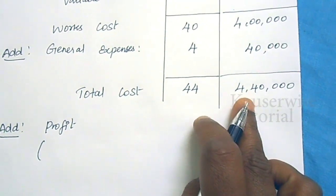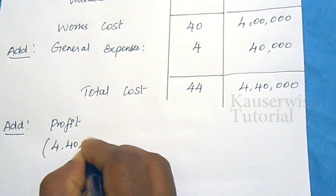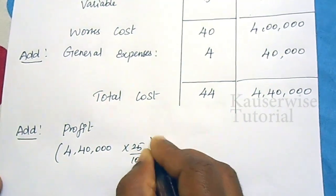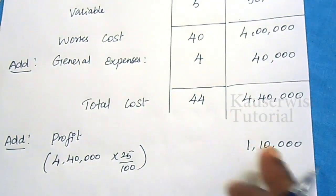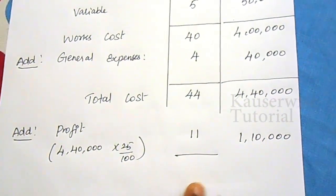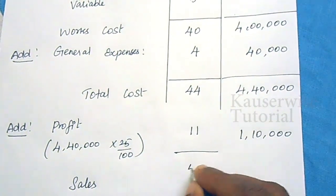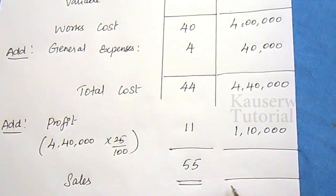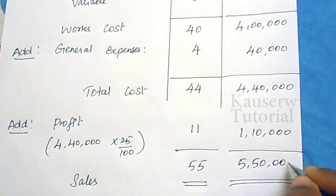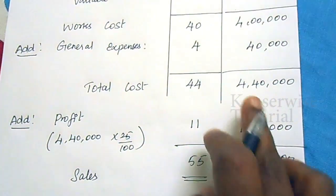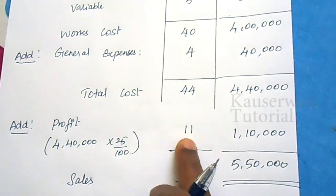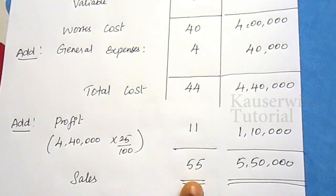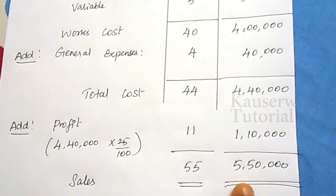Profit = ₹4,40,000 × 25% = ₹1,10,000. Profit per unit = ₹1,10,000 ÷ 10,000 units = ₹11 per unit. Total selling price (sales) = ₹44 + ₹11 = ₹55 per unit; total sales amount = ₹5,50,000. Total cost plus profit equals total sales: ₹4,40,000 + ₹1,10,000 = ₹5,50,000.